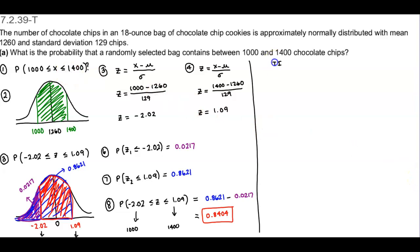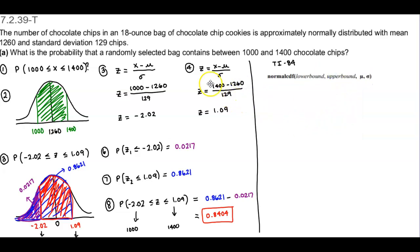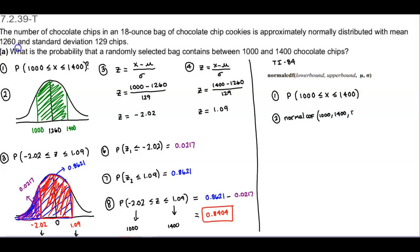We're going to use the TI-84. We're not converting to Z-scores, so we're not going to get the same area. We want to find the probability that it's going to be in between 1,000 and 1,400. So we want to find normal CDF. Our lower bound is going to be 1,000, our upper bound is going to be 1,400, our mean is 1,260, and our standard deviation is 129.